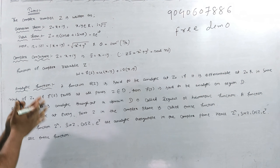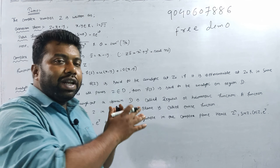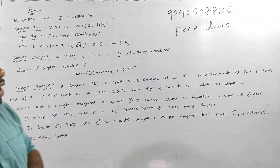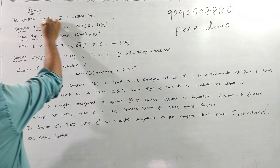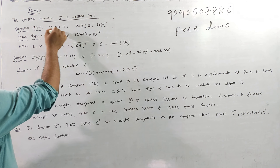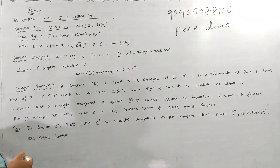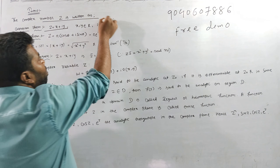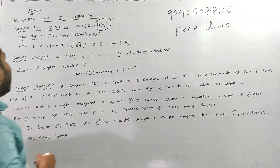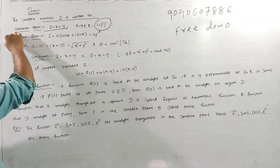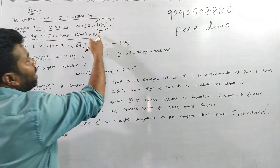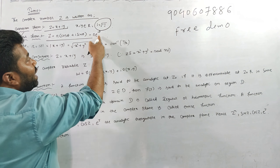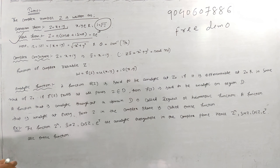What is complex number Z? You will be able to write Z equals X plus iY, where X and Y are components. You will be able to write Z equals R into (cos θ + i sin θ), and also Z equals R·e^(iθ). This is the polar form.